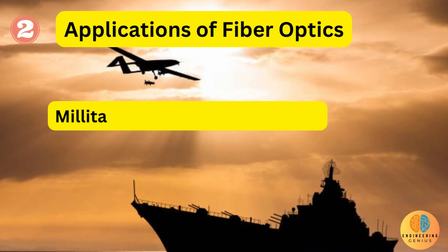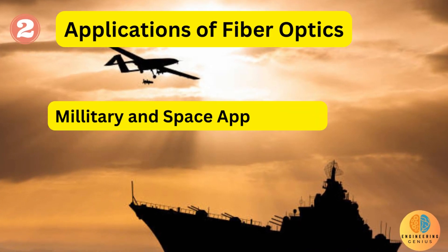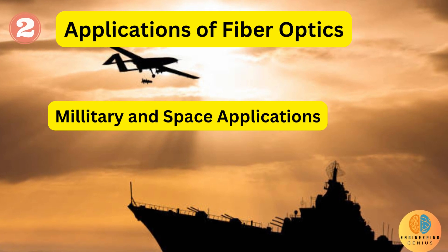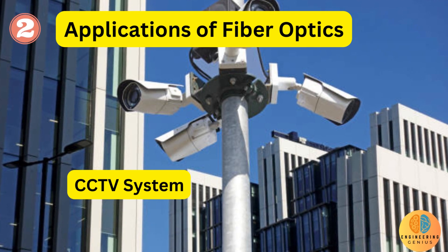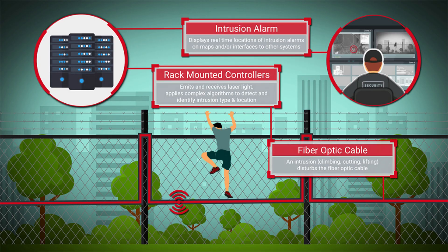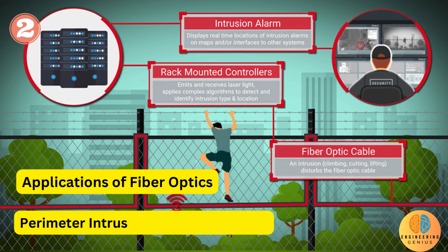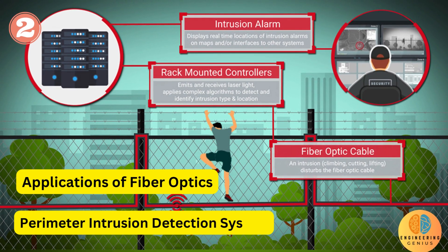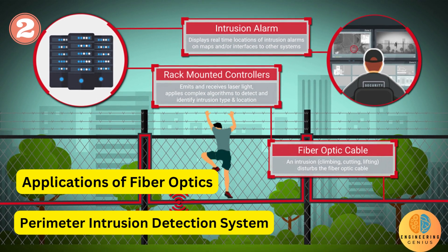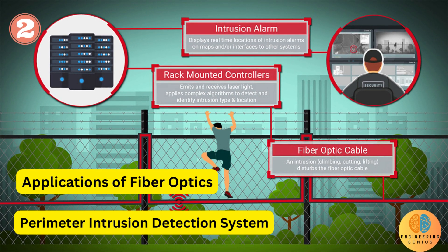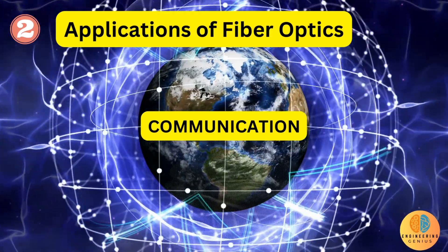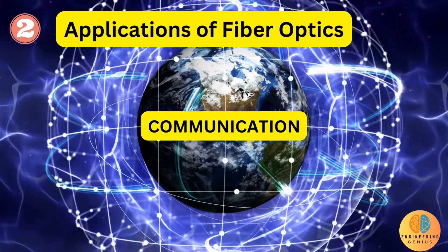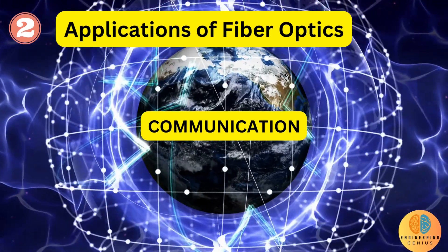Cable TV operators use fiber optics to deliver high-speed television programs to consumers. Military uses fiber optic technology for a wide variety of air, sea, ground, and space applications. CCTV surveillance cameras communicate to servers using high-speed fiber optics systems. A perimeter intrusion detection system (PIDS) is a device or sensor that detects the presence of an intruder attempting to breach the physical perimeter of a property, building, or other secured area using fiber optics. All types of high-speed communications — commercial, industrial, satellite, or marine — fiber optics is the backbone for them.